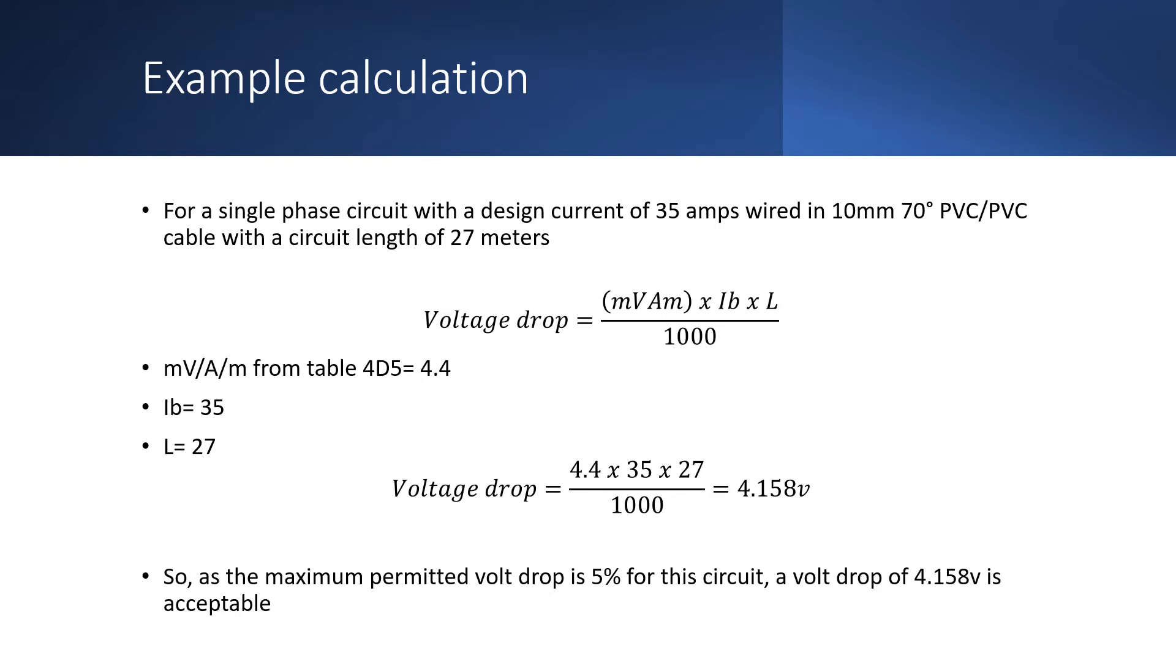The design current is 35. The length of the circuit is 27. So the equation becomes voltage drop equals 4.4 multiplied by 35 multiplied by 27 and then divided by 1000, and that gives us an answer of 4.158 volts. So as the maximum permitted volt drop is 5% for this circuit, a volt drop of 4.158 volts is acceptable.